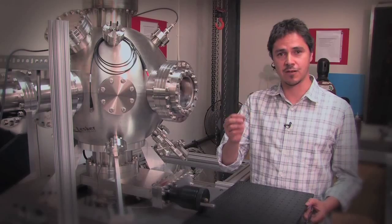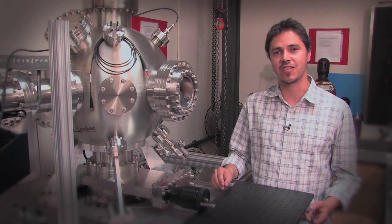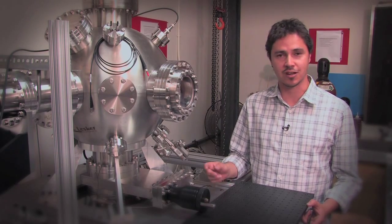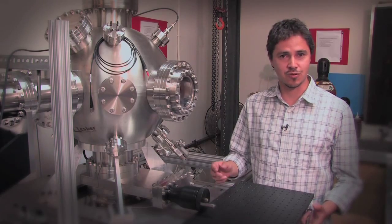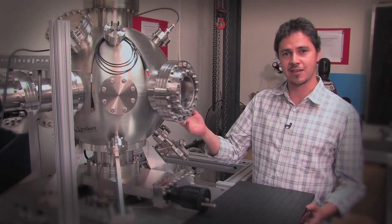A grain of floating dust is hundreds, even thousands of times bigger than the structures we are looking into. So to control the environment, we use systems like this ultra-high vacuum system.